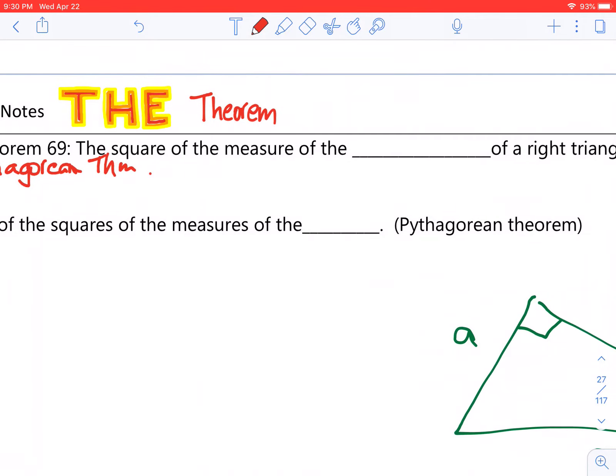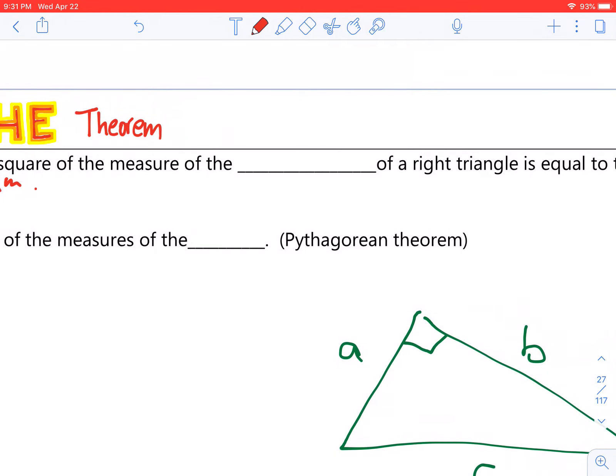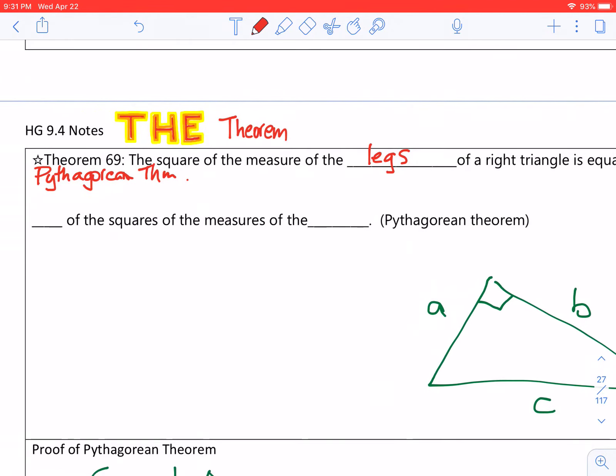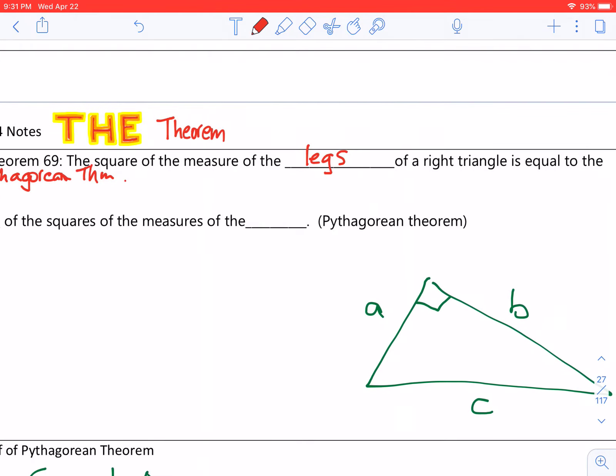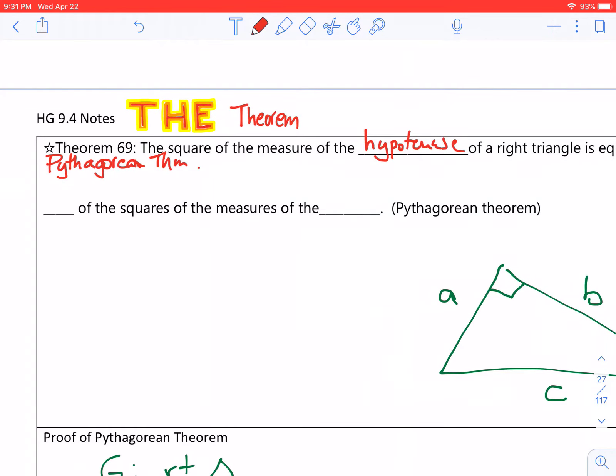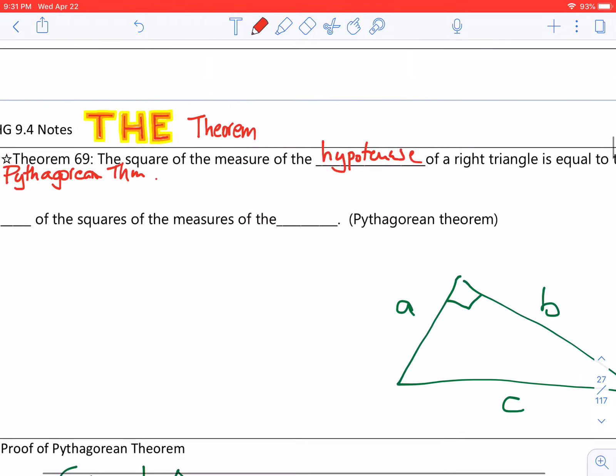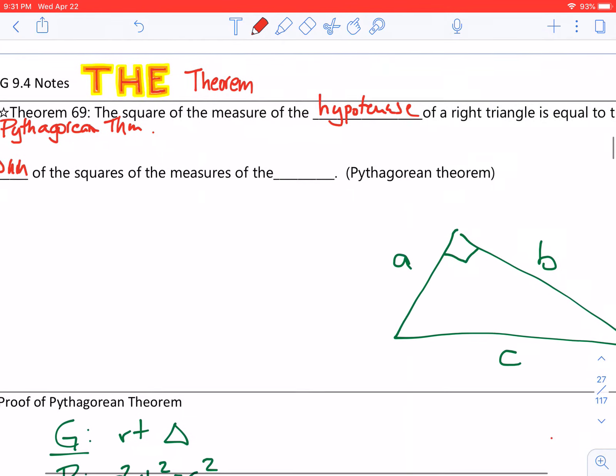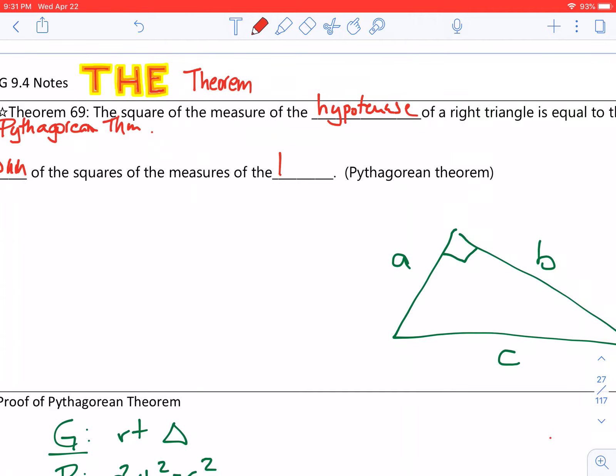The square of the measures of the hypotenuse of a right triangle is equal to the sum of the squares of the legs.